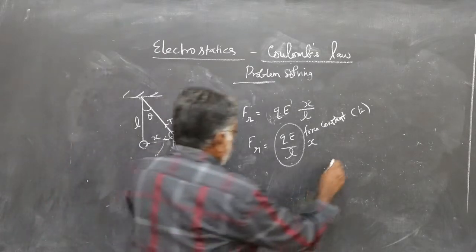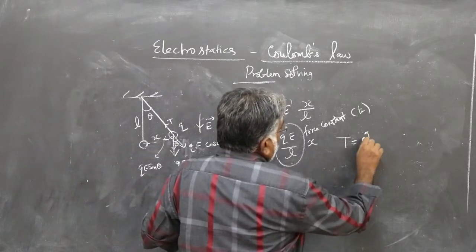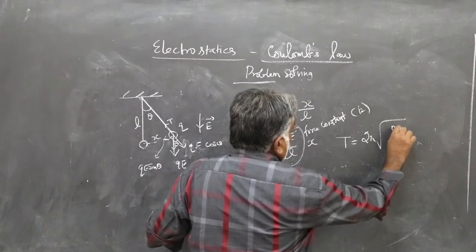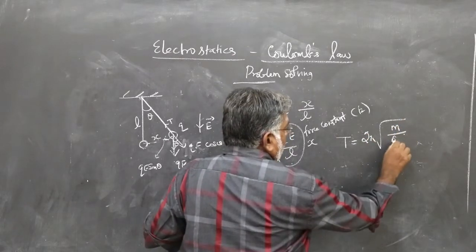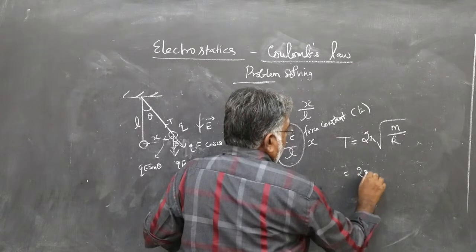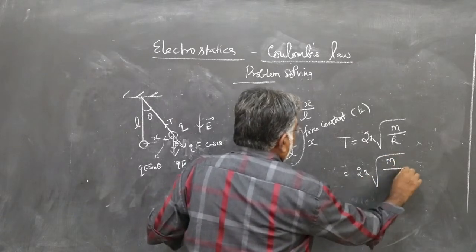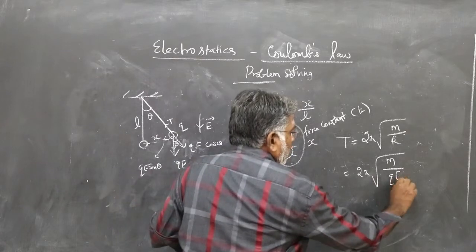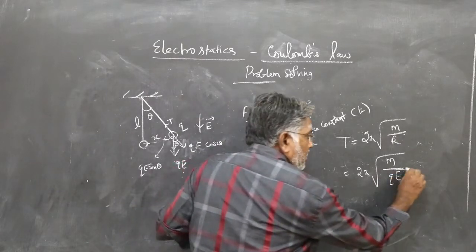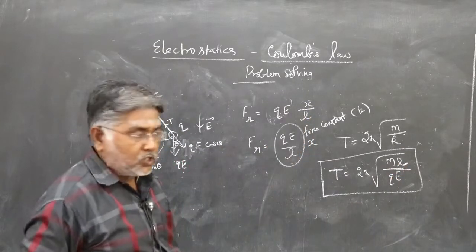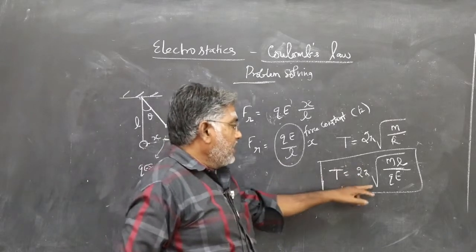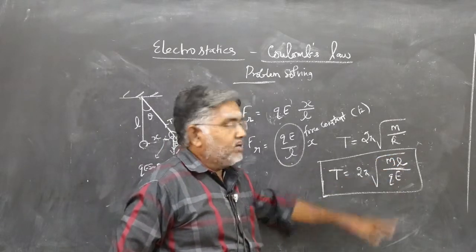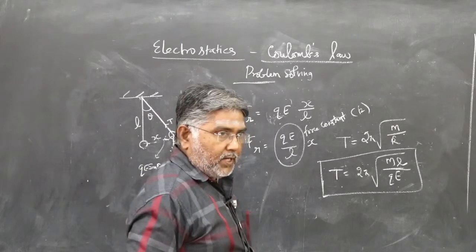Therefore, the time period of oscillation T equals 2π times root m by k. This k you know is qE by L. When qE by L goes to the numerator, time period of oscillation T equals 2π times square root of mL divided by qE.